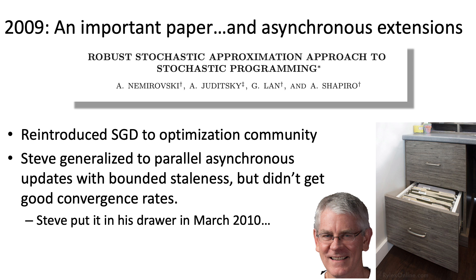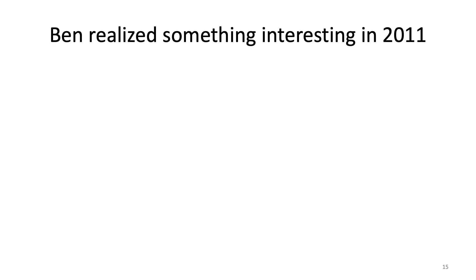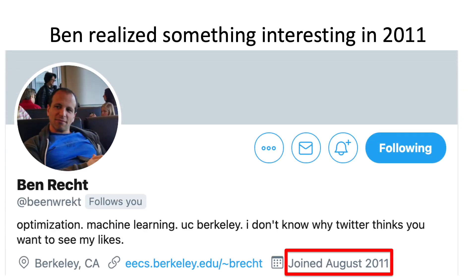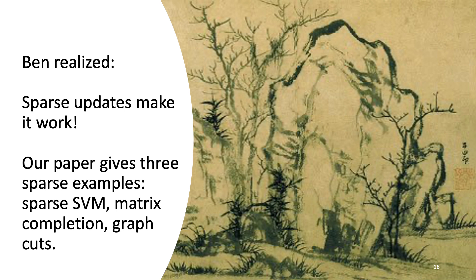Steve was intrigued enough that he had sent his notes to Ben. Ben, inspired by this communication, realized something powerful in 2011: sparsity was a key missing ingredient. By adding the secret sauce of sparsity to Steve's analysis, he could get faster expected convergence rates and explain some of what we were seeing in experiments. We highlight three important cases in the paper where sparsity actually holds.